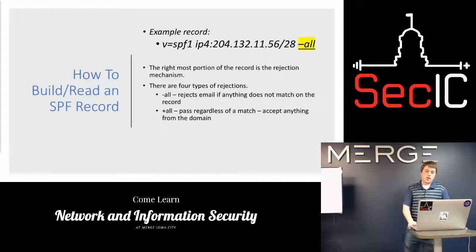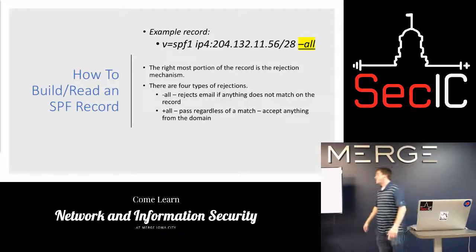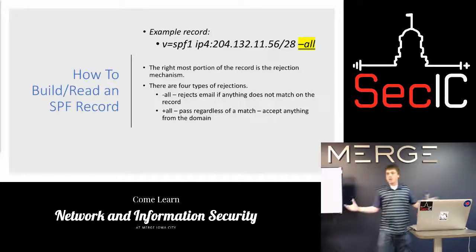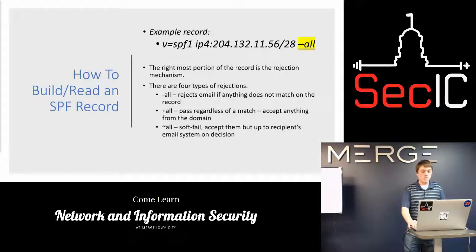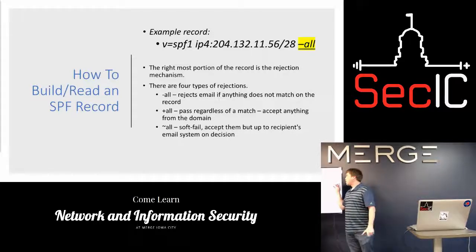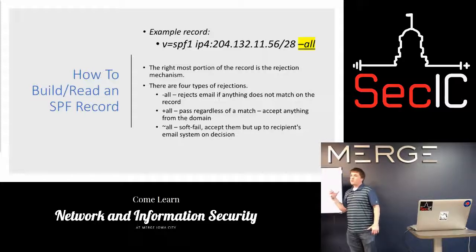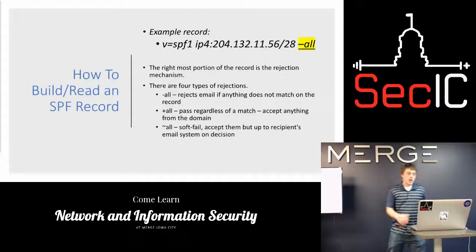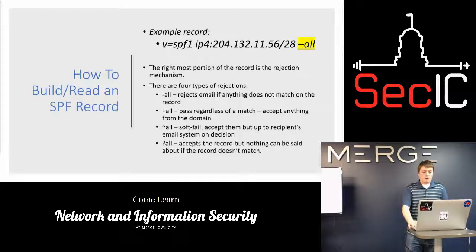The second type of rejection mechanism is plus-all, which basically says that regardless of what's in the record, it's still going to accept the email — it's up to the email system what it wants to do. Then there's tilde-all, which is a soft fail: if it fails the check, it's up to the recipient's email system — they could flag it as spam or decide not to deliver it, however that system is configured. Finally, there's question mark all, which accepts the record but you really can't say anything definitive about what it does.